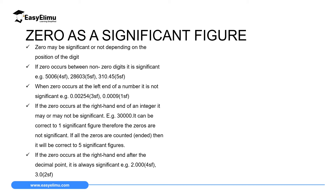Case 1: if zero occurs between non-zero digits, then it is significant. A good example is the number 5006. In this case, all the zeros in between are significant, since if you remove them the number becomes 56, which does not make sense. So this gives us: first significant figure, second, third, and fourth significant figure.